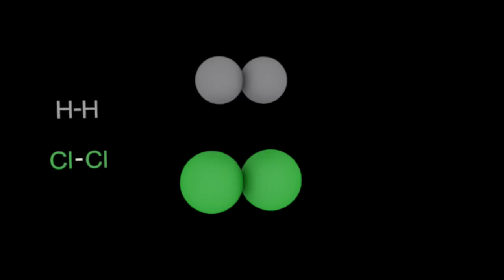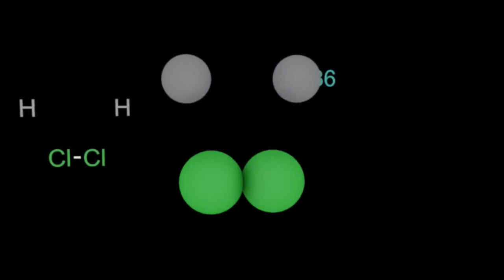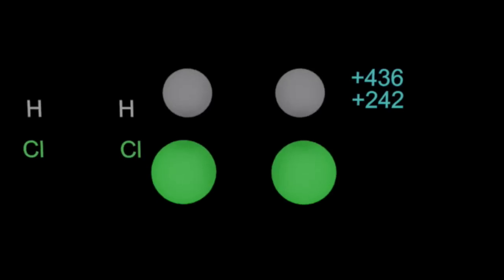Now we can actually put numbers on these events. To break a hydrogen-hydrogen bond is endothermic, and that's how many kilojoules per mole it takes. Chlorine-chlorine, endothermic, so it's also positive.